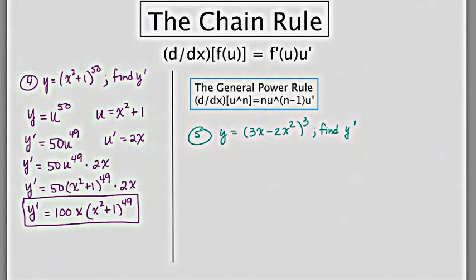maintain the expression, drop the exponent by 1, and then multiply by the derivative of the expression.